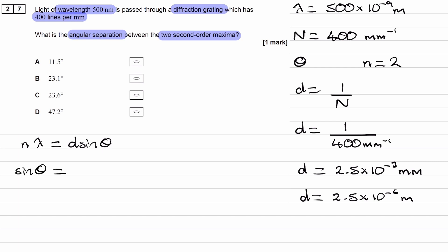Now we can work out what theta is. Sine theta equals n lambda over d, or 2 times 500 times 10 to the minus 9 all over d. That gives us 0.4, so inverse sine of 0.4 is 23.58 degrees.